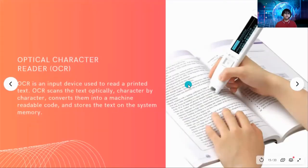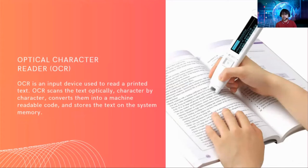We also have the Optical Character Reader, or OCR. The OCR is an input device used to read printed text. OCR scans the text optically, character by character, converts them into a machine-readable code, and stores the text in the system memory.